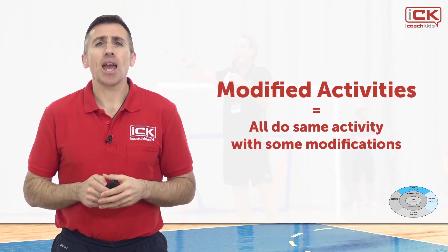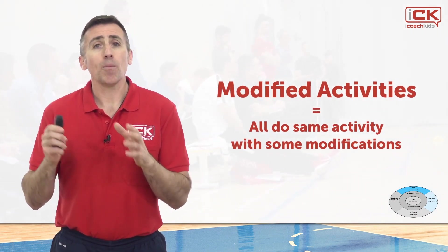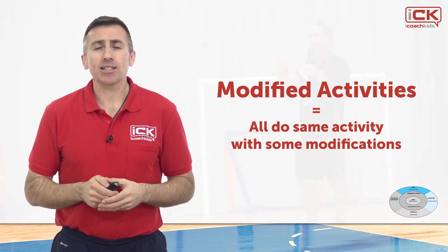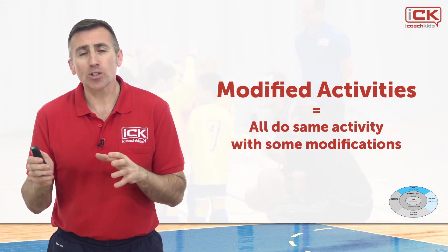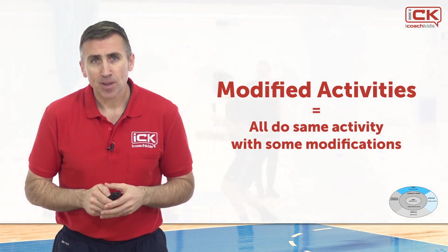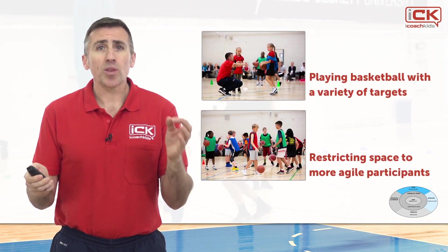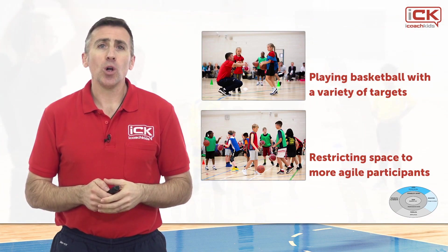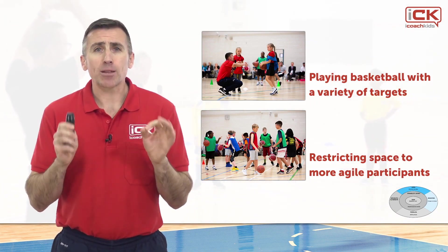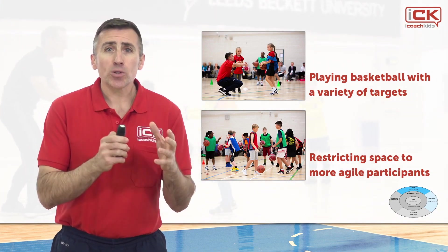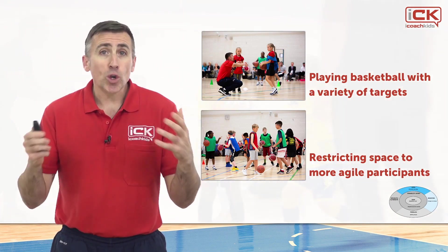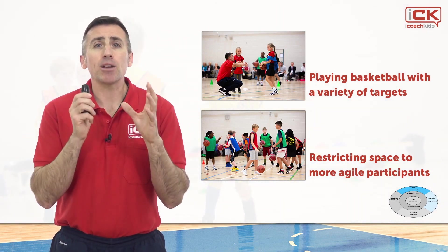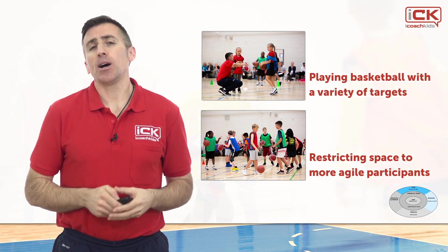In modified activity, everyone participates in the same activity, but the space, rules, equipment, or the way that players interact are adapted to promote inclusion regardless of individual abilities. For example, playing basketball with a variety of targets — such as a lowered basket, a hoop taped to the wall, or a box on the floor — so that participants choose the target more suited to their ability. Or you can balance an activity between mobility-impaired and non-disabled participants by restricting the space available to the more agile partner.